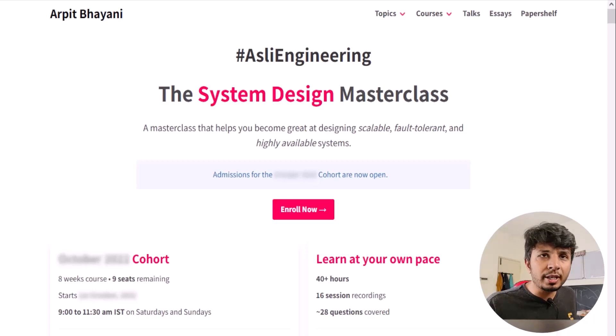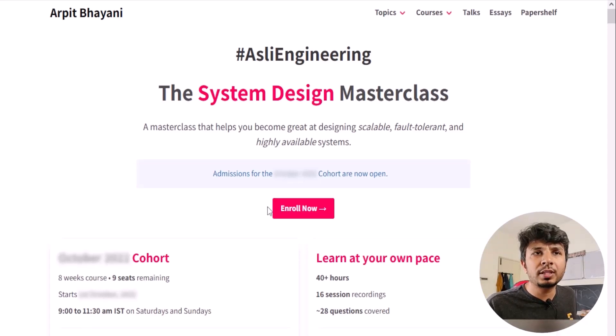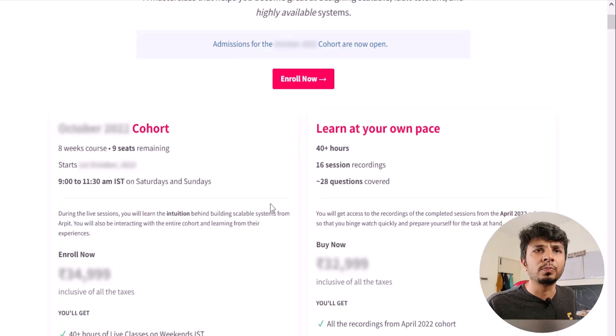So if you're looking to learn system design from the first principles, you will love this course. I have two offerings for you: the first one is the live cohort-based course and the second one is the recorded offering. The live cohort-based course happens once every two months and will go on for eight weeks, while the recorded course contains the recordings from one of the past cohorts as is.